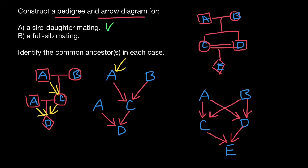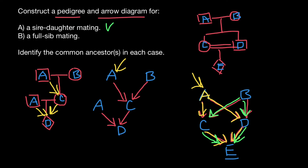So who is going to be the common ancestor of E? The common ancestor of E, again, is going to be individuals that we can track from both sides — the father's side and the mother's side. This is going to be individual A. Take a look — we can track gene flow from both the mother's side and the father's side. And this is also going to be individual B. Again, we can also track gene flow from both sides, mother's side and father's side. So both of these individuals are going to be common ancestors of individual E.